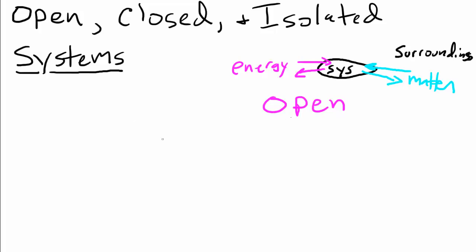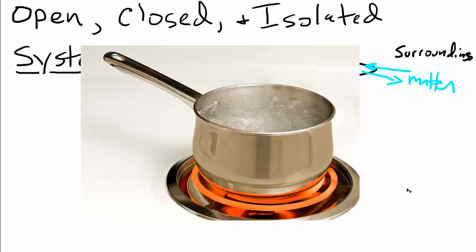An example of an open system is if you have a pot of water on the stove boiling. Look at this red hot coil down here on the stovetop - that's adding energy to the system. At the same time, this very hot pan is radiating heat energy out and heat energy is rising out, convecting to the air as well. So not only is energy going into this system, it's also coming out of it.